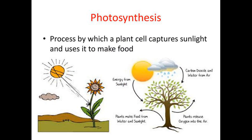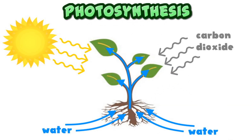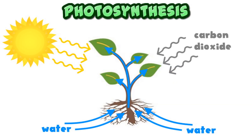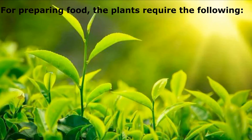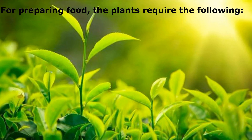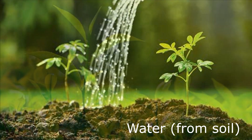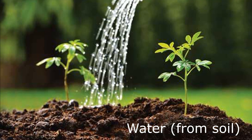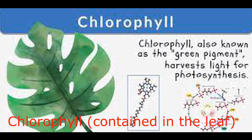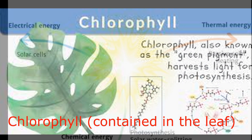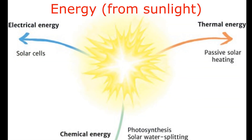Therefore, photosynthesis is the process by which green plants capture solar energy and use it to convert carbon dioxide and water into simple sugars. For preparing food, the plants require the following: water from soil, carbon dioxide from air, chlorophyll contained in the leaf, and energy from sunlight.